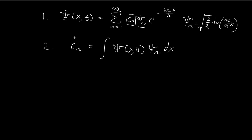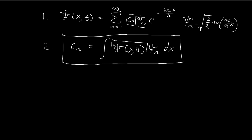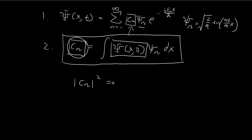In order to lock down the values of these constants, we have this formula. We can lock down the values of c_n by specifying an initial wave function. After you specify an initial wave function, you take this integral, lock down the values of c_n, and plug it back into this expression to obtain your final solution. There's a special interpretation: the modulus of c_n squared equals the probability that a measurement of energy returns the nth energy level.